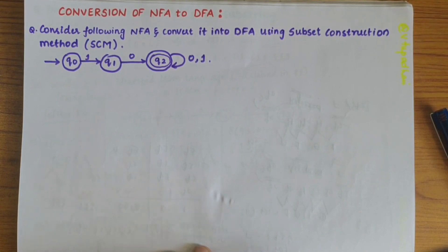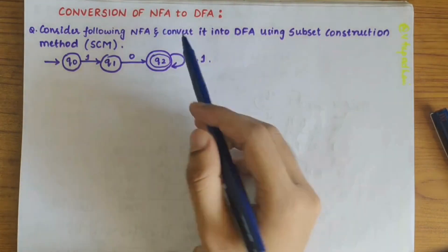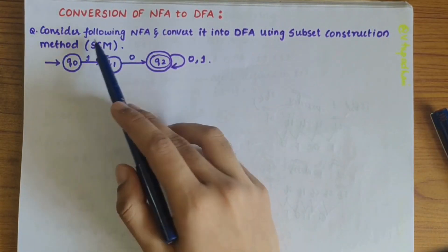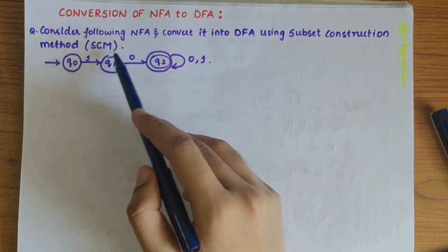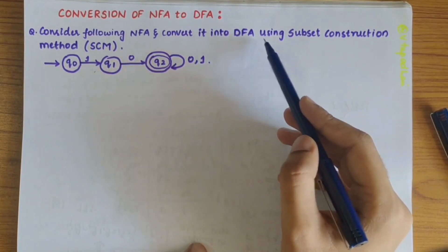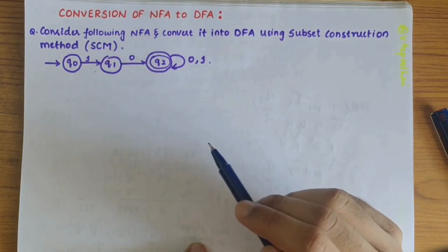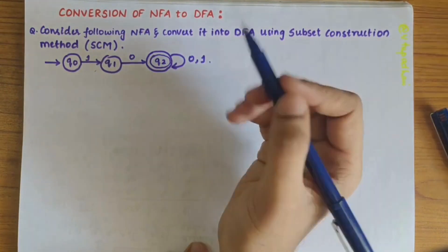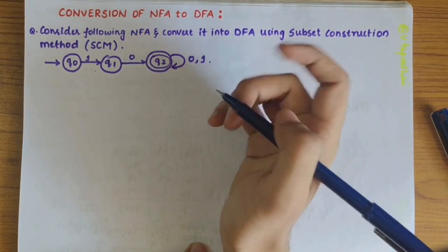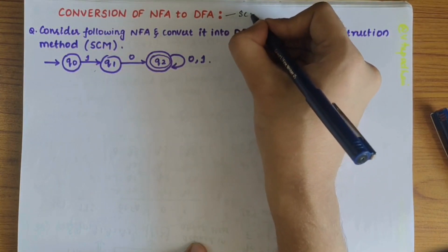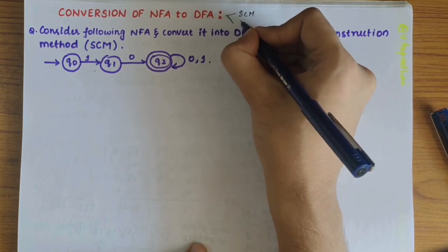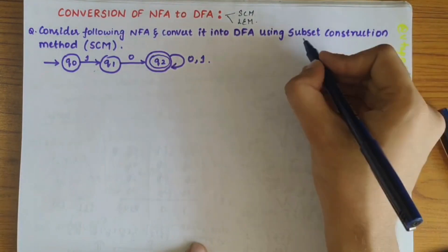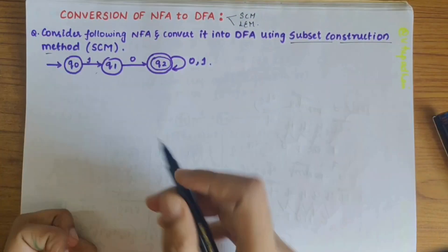In this video we'll be looking into the conversion of NFA to DFA. The problem statement says we consider a given NFA and convert it into DFA using the subset construction method. There are two methods for conversion: the subset construction method and the lazy evaluation method. In this video we'll be discussing the subset construction method.